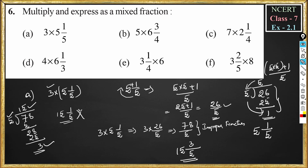So the answer is 15³/₅. Note: if you had simply multiplied 3 with 5 you would get 15¹/₅ — that is wrong. The correct answer is 15³/₅.